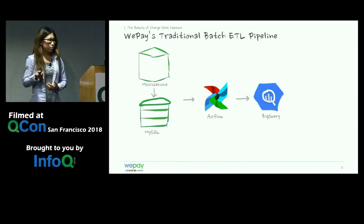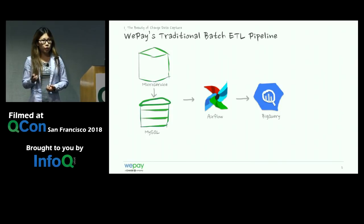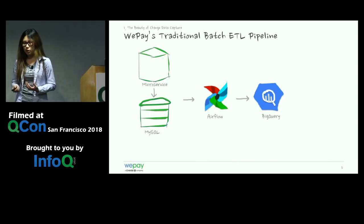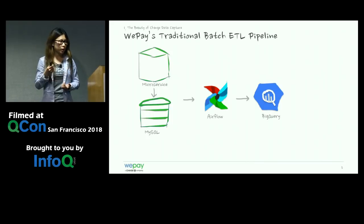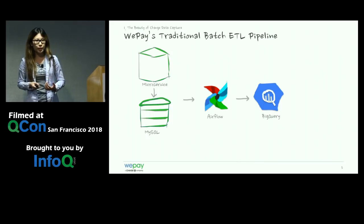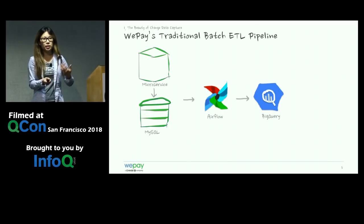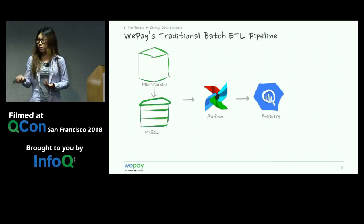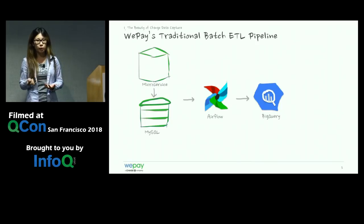At WePay, we use a microservice architecture. Most of our microservices are stateful, and states are typically stored in a MySQL database. We use Airflow to orchestrate our data pipelines — think of it as cron on steroids designed for data pipelines and complex workflows. We periodically poll the MySQL database for changes by looking at the modified-time column in each table, and if it changed in the most recent interval, we upload that information into BigQuery.